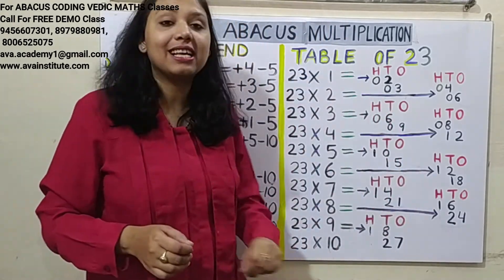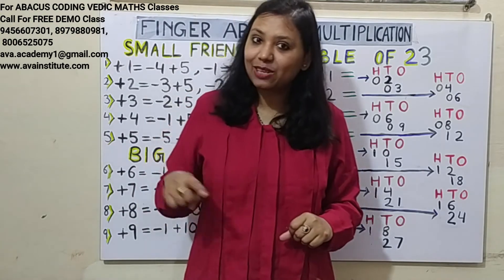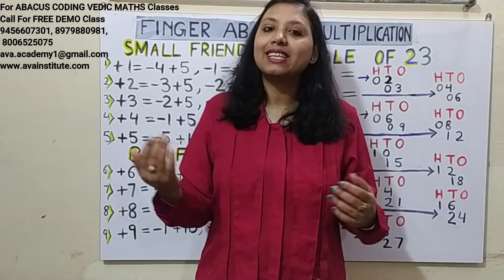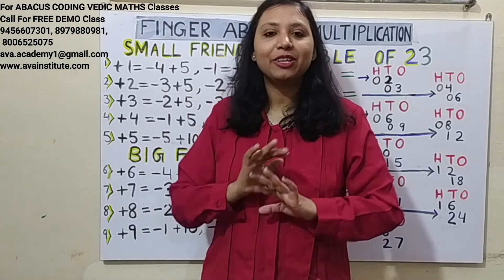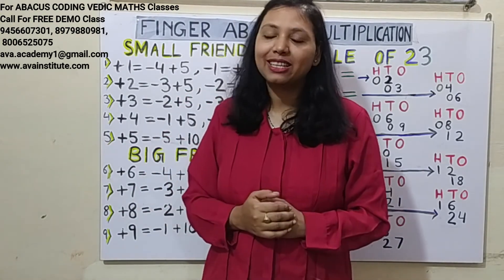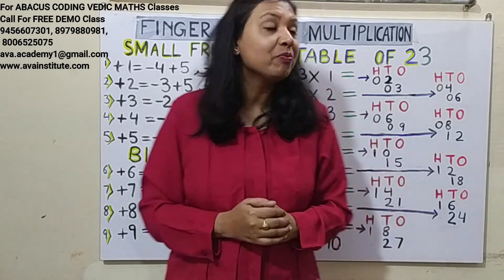23 × 10: just put a 0 at the end. Answer is 230. We don't have to do any finger calculation for this.